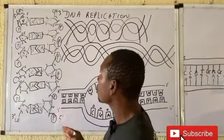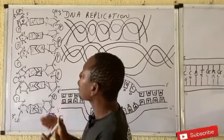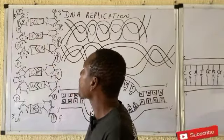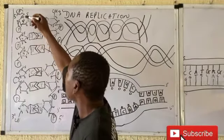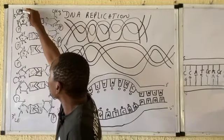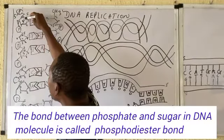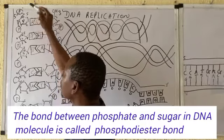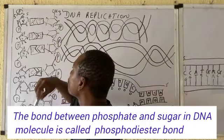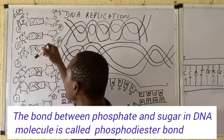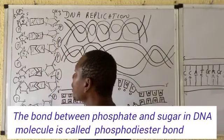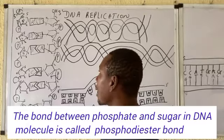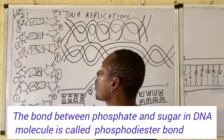This is a very simple structure. Now take a look at the backbone — the backbone comprises a phosphate group and a five-carbon sugar.